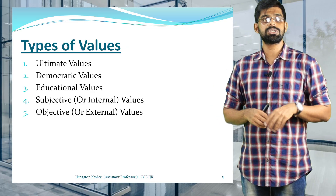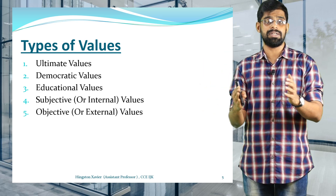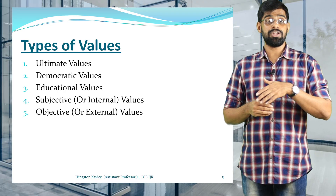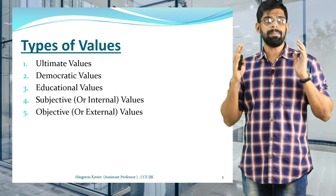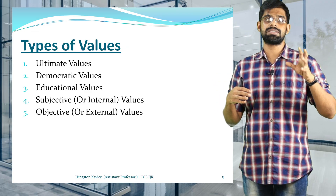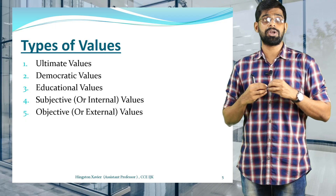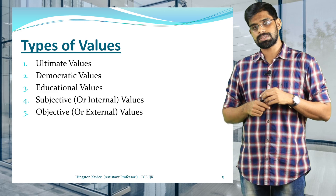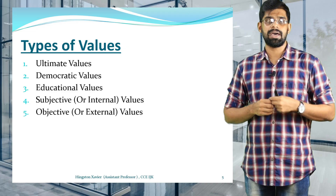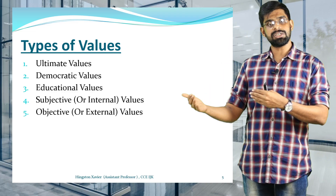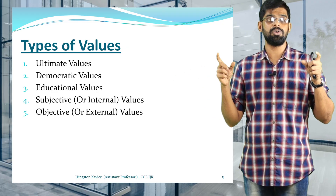The second type is democratic values, which are incorporated into individuals according to the democratic setup in the society. For example, India is a democratic country, so our beliefs and values differ from those in a Muslim-majority country like the UAE. The political system plays an important role in shaping human values. The next type is educational values — values gained through the education system, such as learning to stand up and greet a teacher when they enter the classroom.